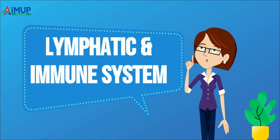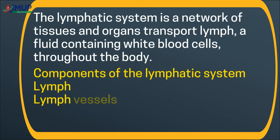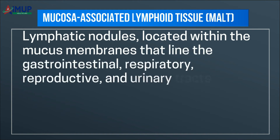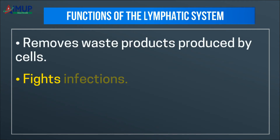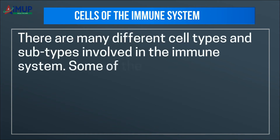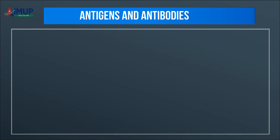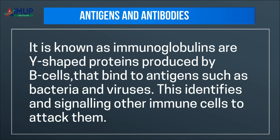The lymphatic system is a network of tissues and organs that transport lymph — a fluid containing white blood cells — throughout the body. Components include lymph, lymph vessels, lymph nodes, thymus, and spleen. Mucosa-associated lymphoid tissue includes lymphatic nodules located within mucus membranes lining the gastrointestinal, respiratory, reproductive, and urinary tracts, including tonsils, adenoids, and Peyer's patches. Functions include removing waste products produced by cells, fighting infections, and absorbing fats and fat-soluble vitamins from the digestive system. Cells of the immune system include lymphocytes, neutrophils, macrophages, and dendritic cells. Antibodies, known as immunoglobulins, are Y-shaped proteins produced by B cells that bind to antigens such as bacteria and viruses, identifying and signaling other immune cells to attack them.